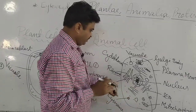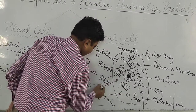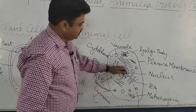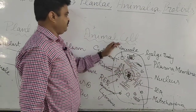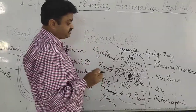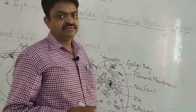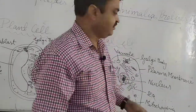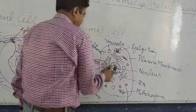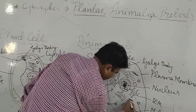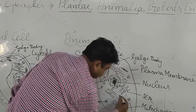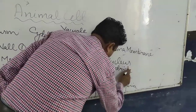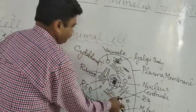There are also small sacs called peroxysomes found in the animal cell. One important structure found only in the animal cell is the centriole. Centrioles form the centrosome, which helps in cell division, and they are absent in the plant cell.